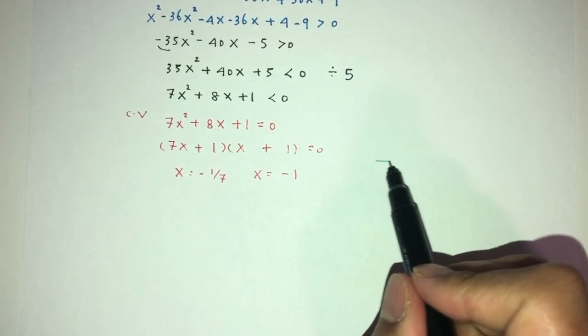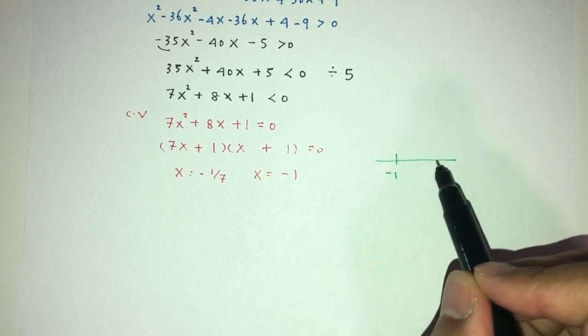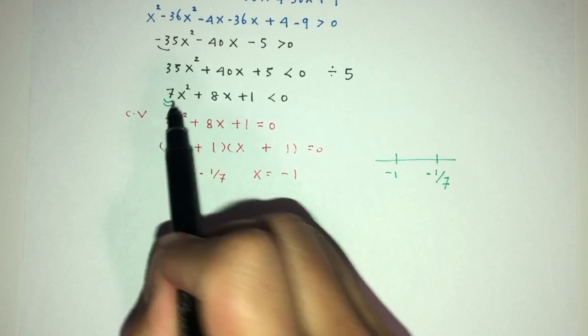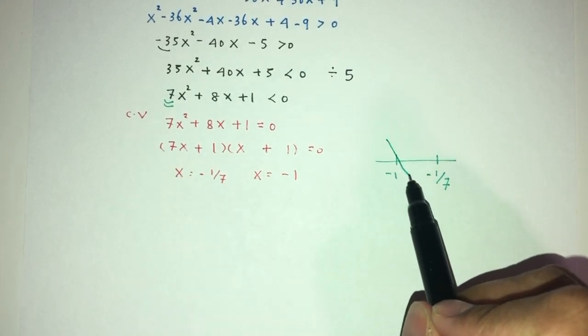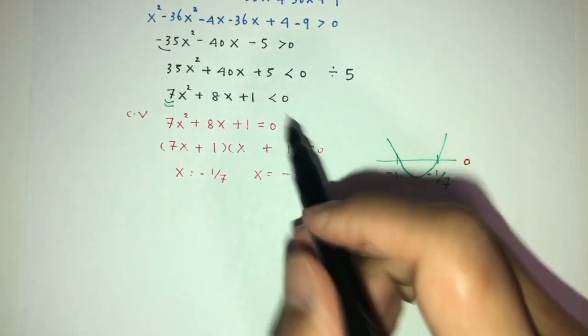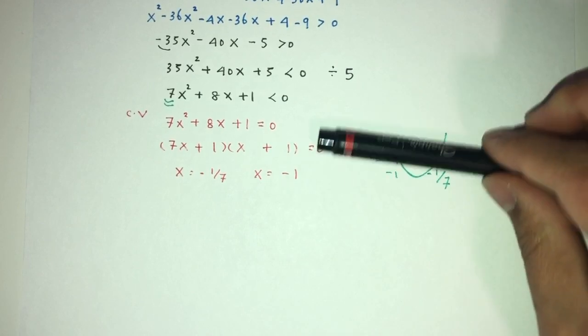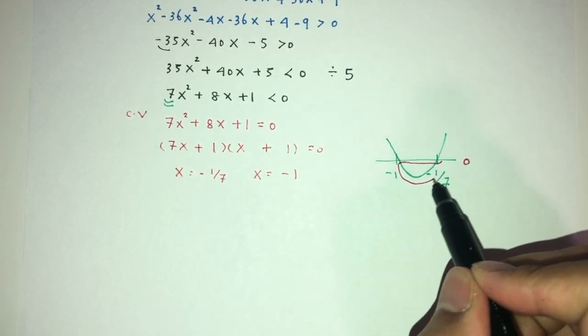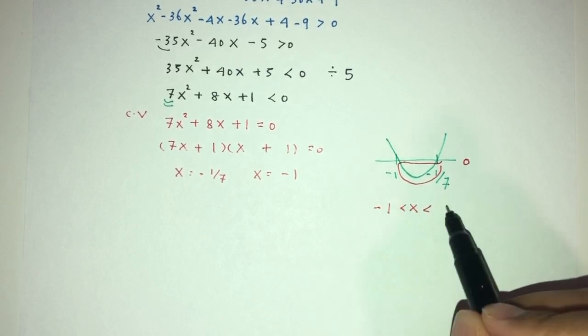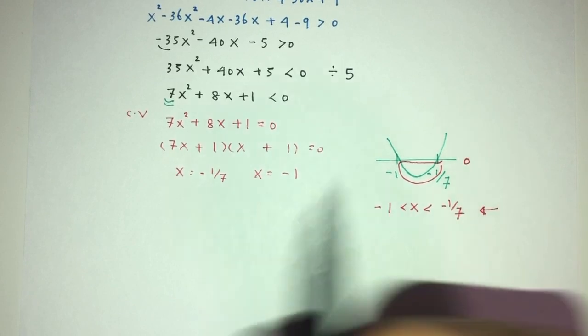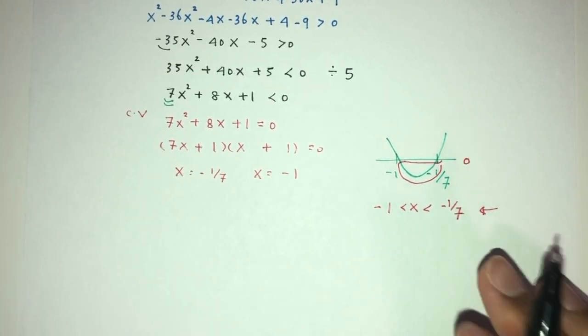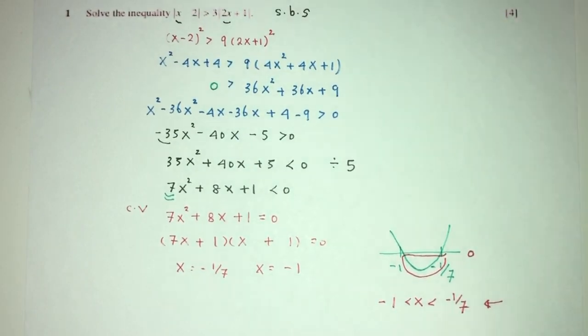Now, if you look at this using the number line, that will be -1. That will be -1 over 7. This one is positive. It will be of this shape, of course. This is the line of 0 and we need this to be less than 0. So, below this line. So, x will have to be between the value of this and this. According to your question, this is your set of values for x for which this is solved. And that is your question number 1.